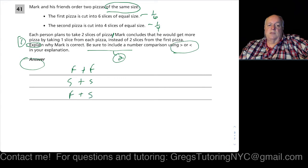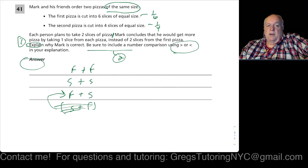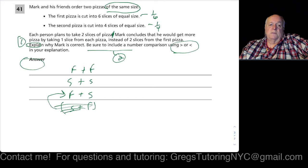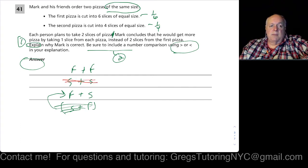Each person takes two slices. You could take two from the first pizza, two from the second, or one from each. Mark concludes that he gets more pizza by taking one slice from each pizza instead of two slices from the first pizza. The question asks us to explain why he's correct. They're not considering the case of two slices from the second pizza.